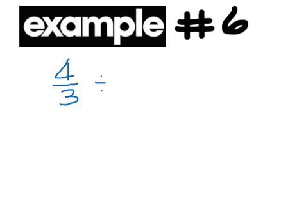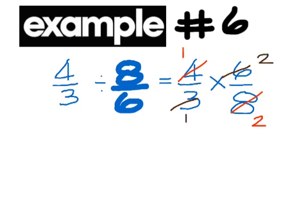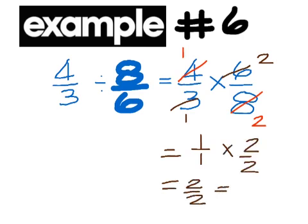Example 6: 4 over 3 divided by 8 over 6. Keep 4 over 3, change to multiplication, and flip 8 over 6 to make it 6 over 8. Notice you can cancel: 4 and 8 cancel to 1 and 2, and 3 and 6 cancel to 1 and 2. So 1 over 1 times 2 over 2 is 2 over 2, which equals 1.